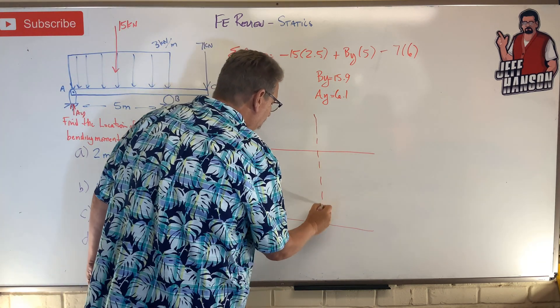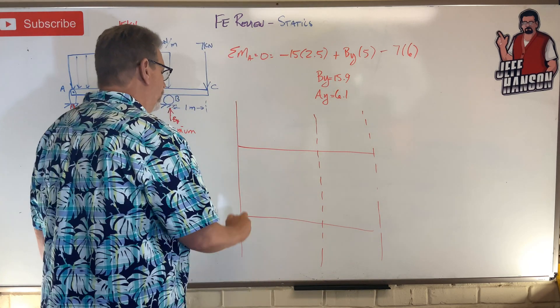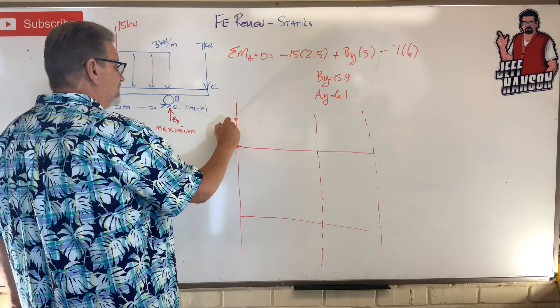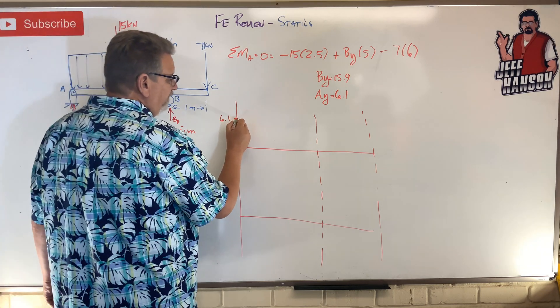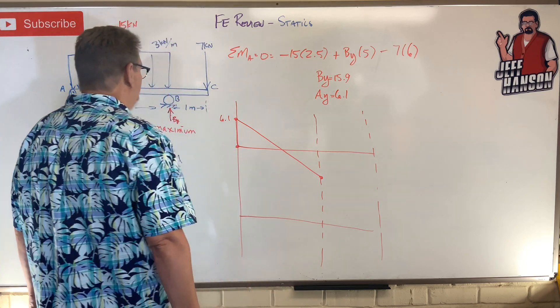Okay, here's the end of the distributed load, here's the end of the beam. What's going on on the V diagram? I'm going to jump up 6.1, I'm going to go down 15, and then I'm going to jump up 15.9.